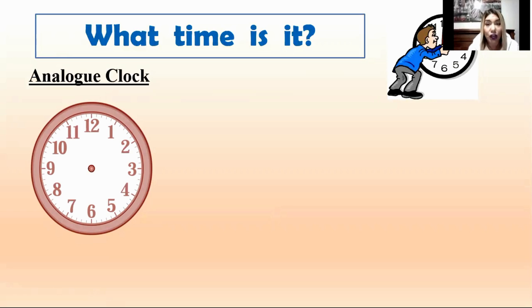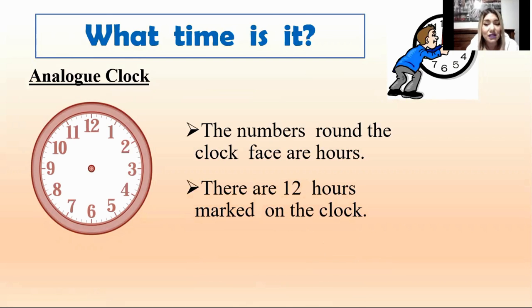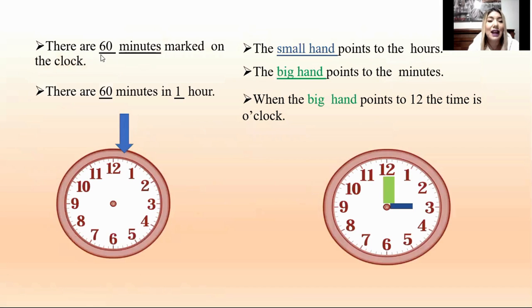The first one is analog clock. The numbers around the clock face are hours. There are twelve hours marked on the clock. There are sixty minutes marked on the clock and there are sixty minutes in one hour. This is very important so you have to look at this clock.